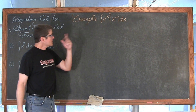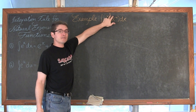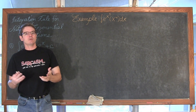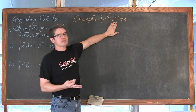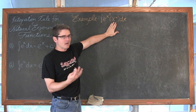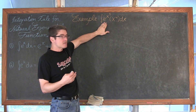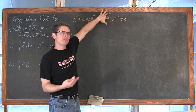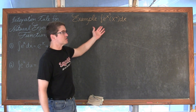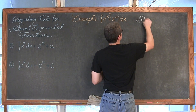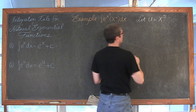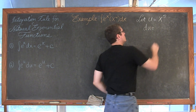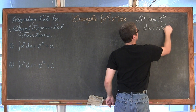For our first example, we have the indefinite integral of e to the x to the fifth power times x to the fourth dx. It can be tricky to figure out how to set up your u-substitution, but I am pretty sure it is not going to be x to the fourth. Our main operation is this e, this natural base, raised to the x to the fifth power. So I am going to let u equal x to the fifth. Then du is going to be equal to 5x to the fourth dx.